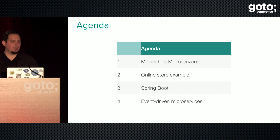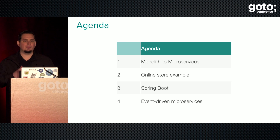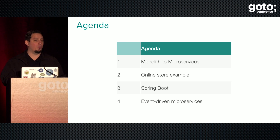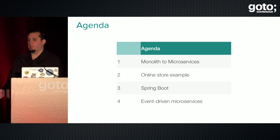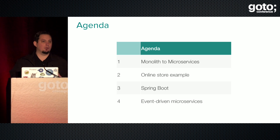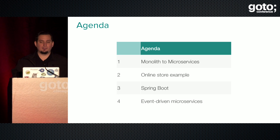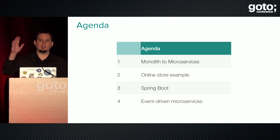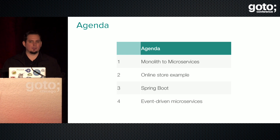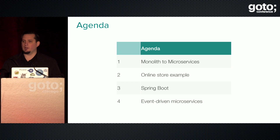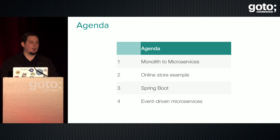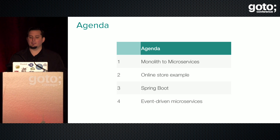A little bit of an agenda: we're going to talk about monolith to microservices, tracing that progression and answering the question of why we're on this path. Then I'm going to show you an online store example I put together for the book — I'll walk through a demo of it, and usually I have people guess how many microservices are behind it. Then I'll talk about Spring Boot, event-driven microservices, some research I've done, and some patterns I've seen working with Pivotal's customers.